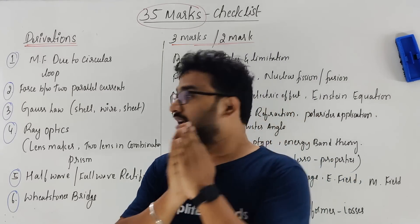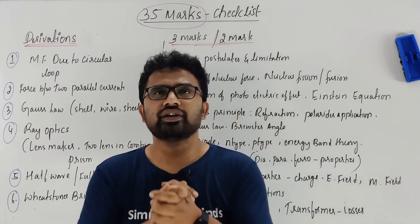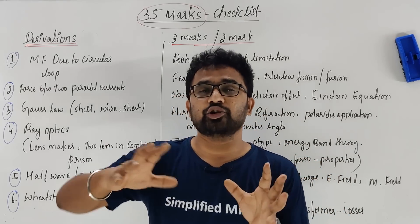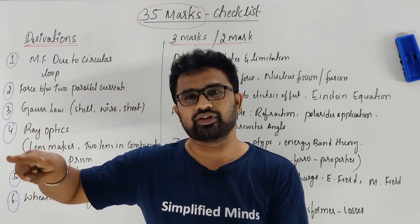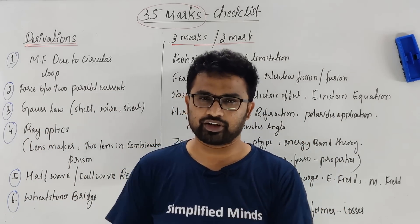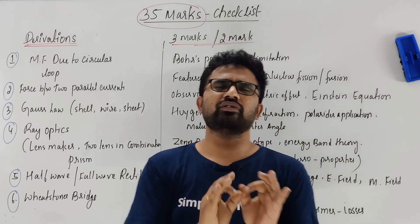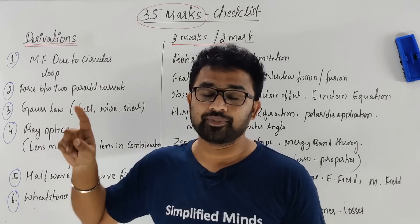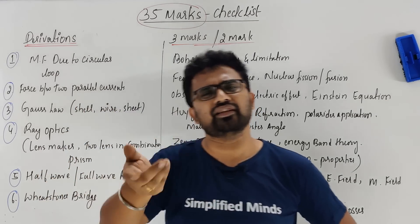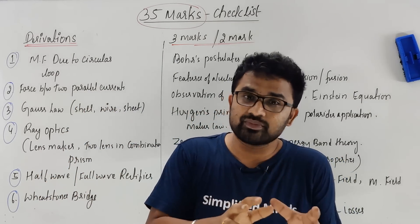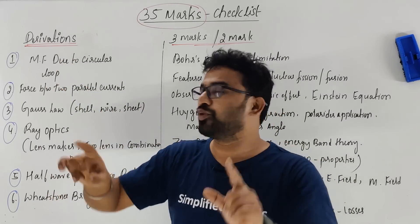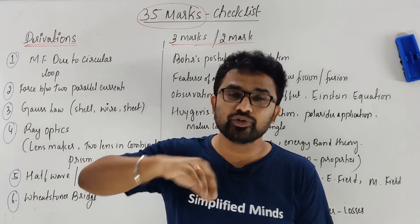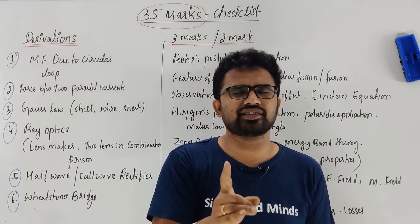First, you need to understand the derivations. You have to answer four derivations, and then you have to answer Part B in the textbook — almost two derivations. So Part A has two derivations actually. Most of the time, you have to study the magnetic field in a circular loop and the force between two parallel conductors. I'm going to suggest that you learn everything — don't just study only these two topics.